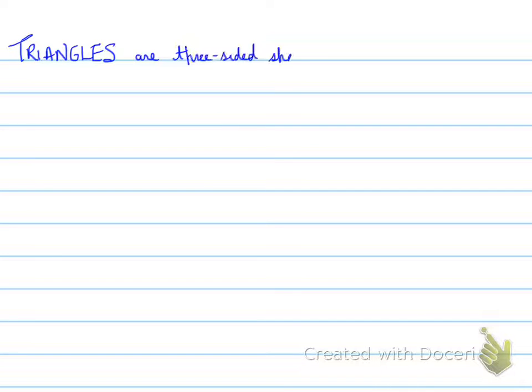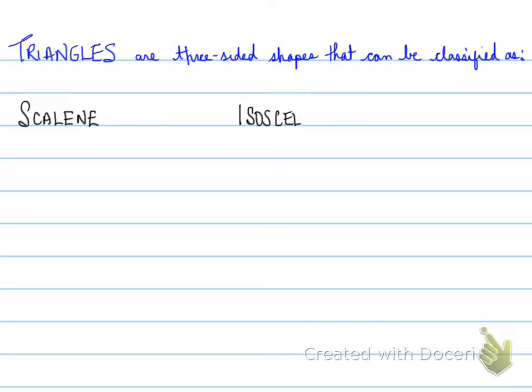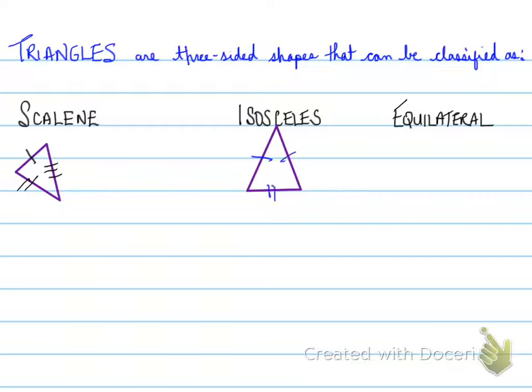Triangles are three-sided shapes that can be classified as scalene, isosceles, or equilateral. Scalene means each side is a unique length. Isosceles means that two sides are the same length. And equilateral means all three sides have the same length.